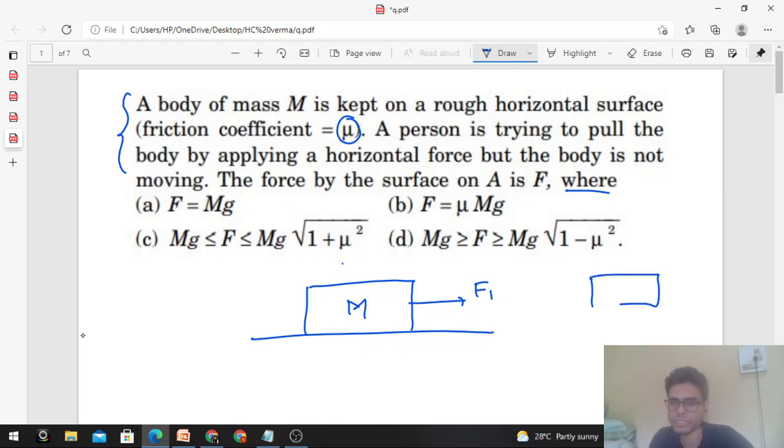What are the forces acting on the body? How many forces are on the body? One is weight, capital M, and in the next direction. And if the body is not moving, what does that mean?